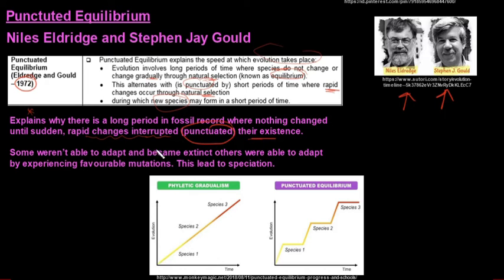So some weren't able to adapt and they became extinct. And then there were others that were able to adapt by experiencing favorable mutations. And then this led to speciation, so the formation of new species.